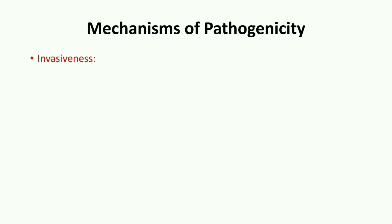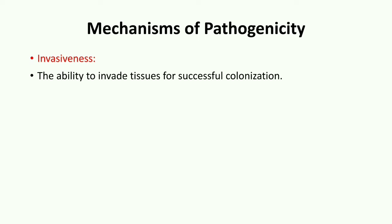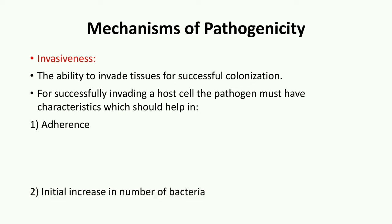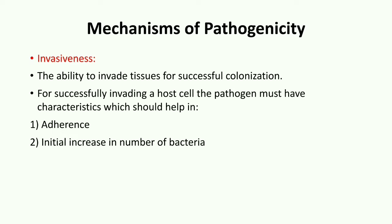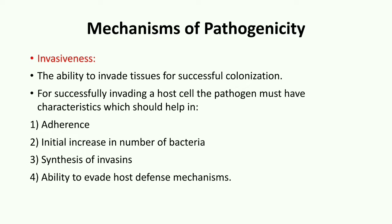Two broad qualities of pathogenic bacteria underlie the means by which they can cause disease. The first being invasiveness — the ability to invade a tissue and successfully colonize there. For successfully invading host cells, a pathogen must have characteristics which help it in colonization, which encompasses the processes of adherence, initial multiplication, synthesis of invasins — that is, production of extracellular substances which facilitate invasion — and the ability to evade host defense mechanisms.